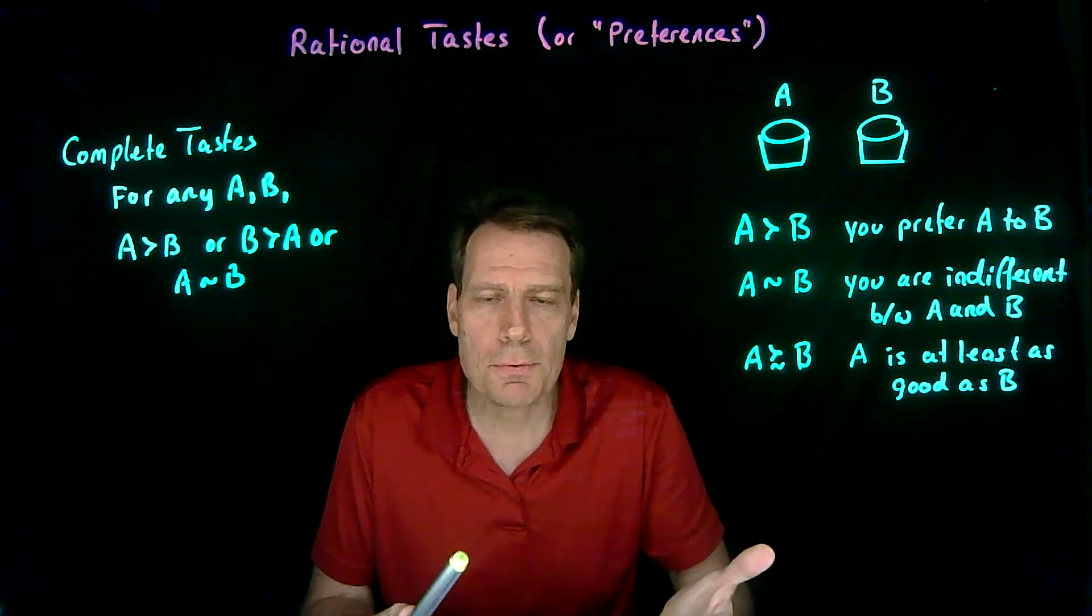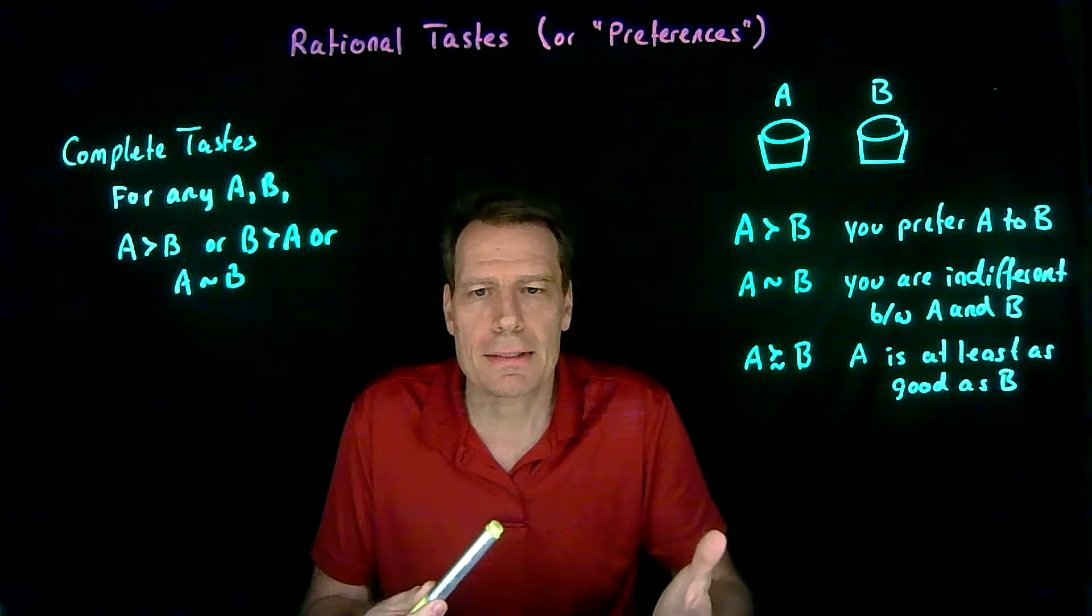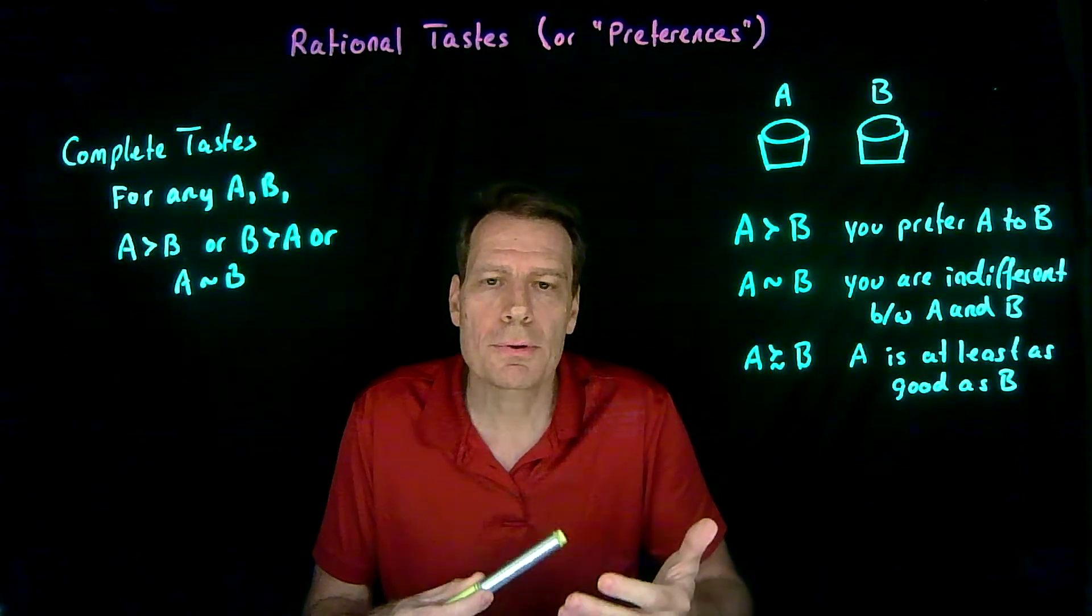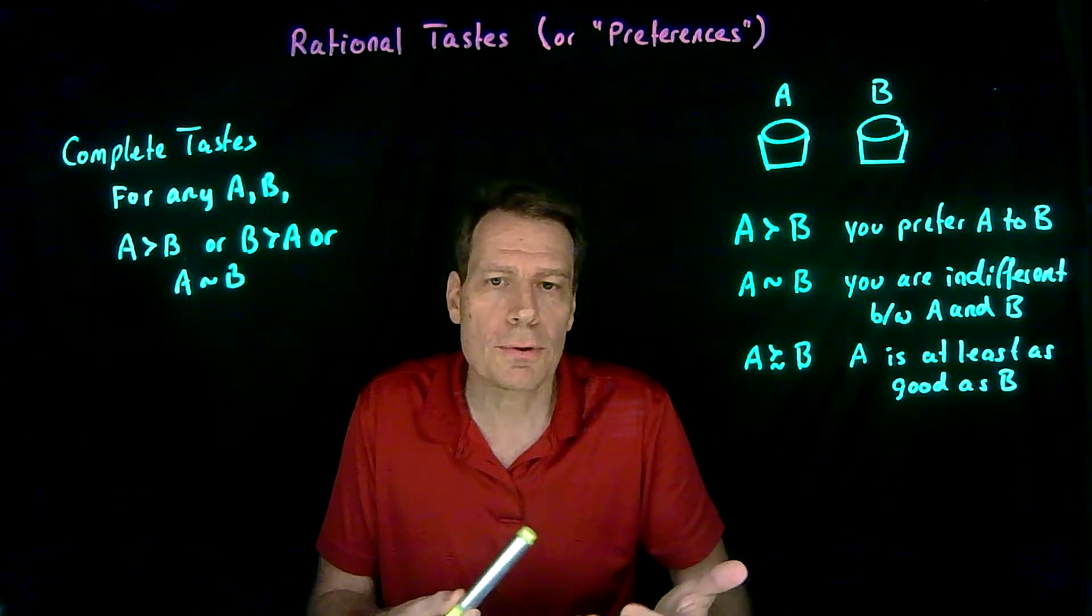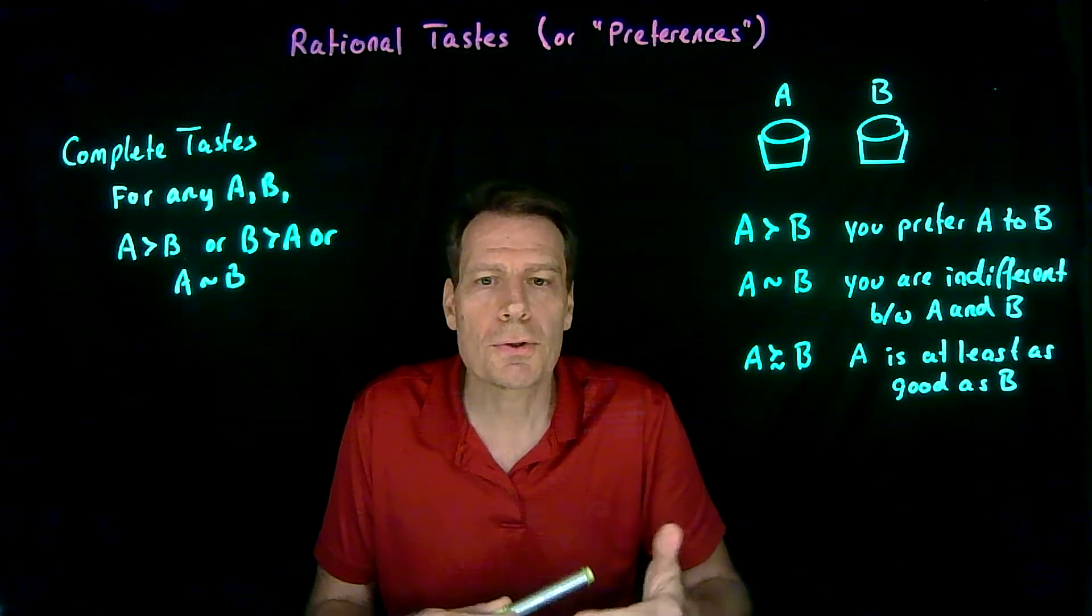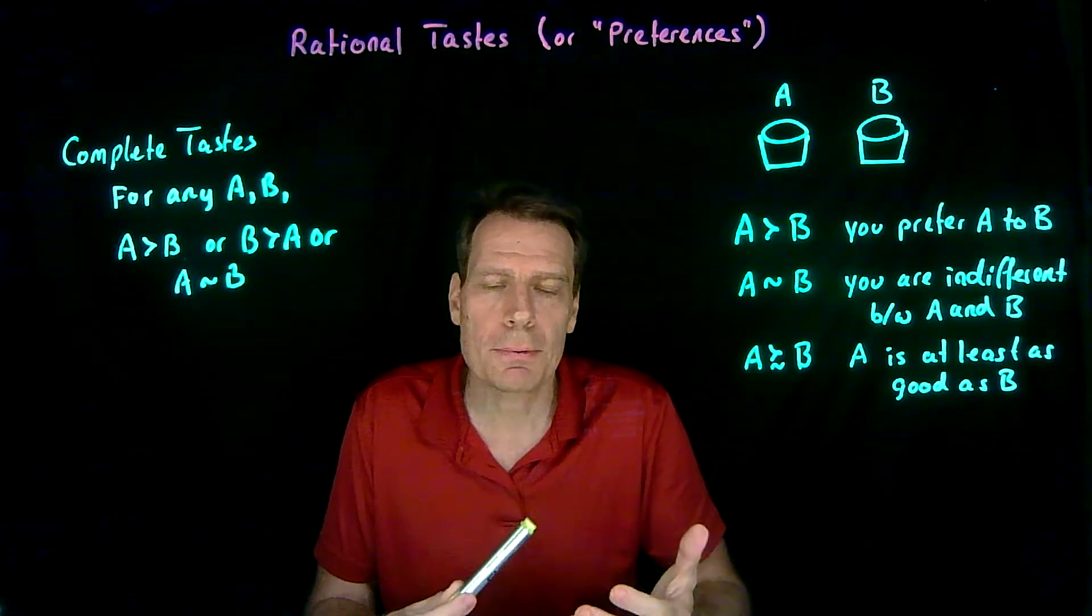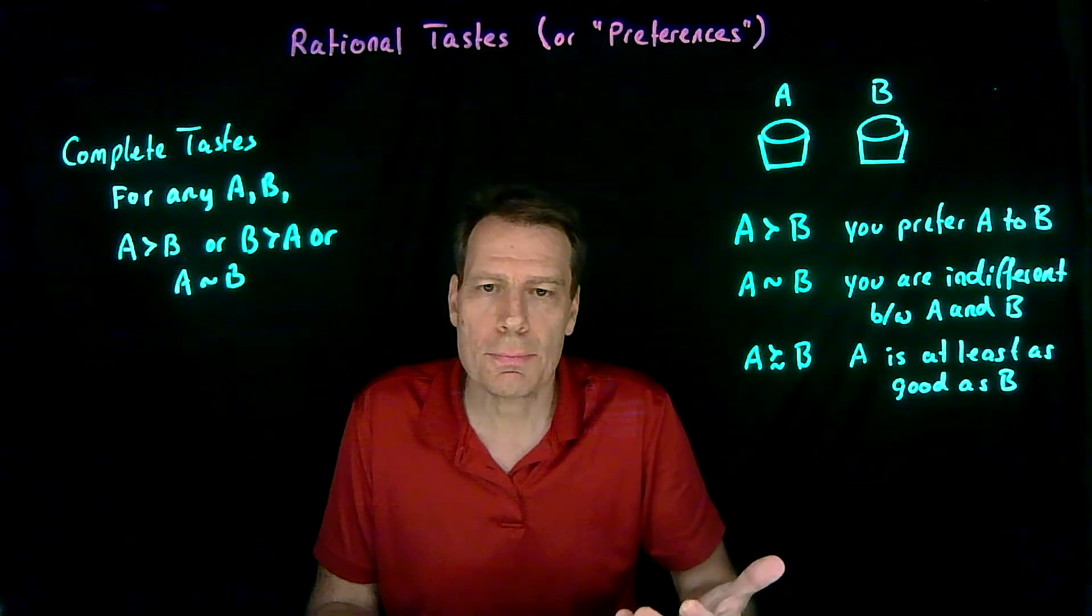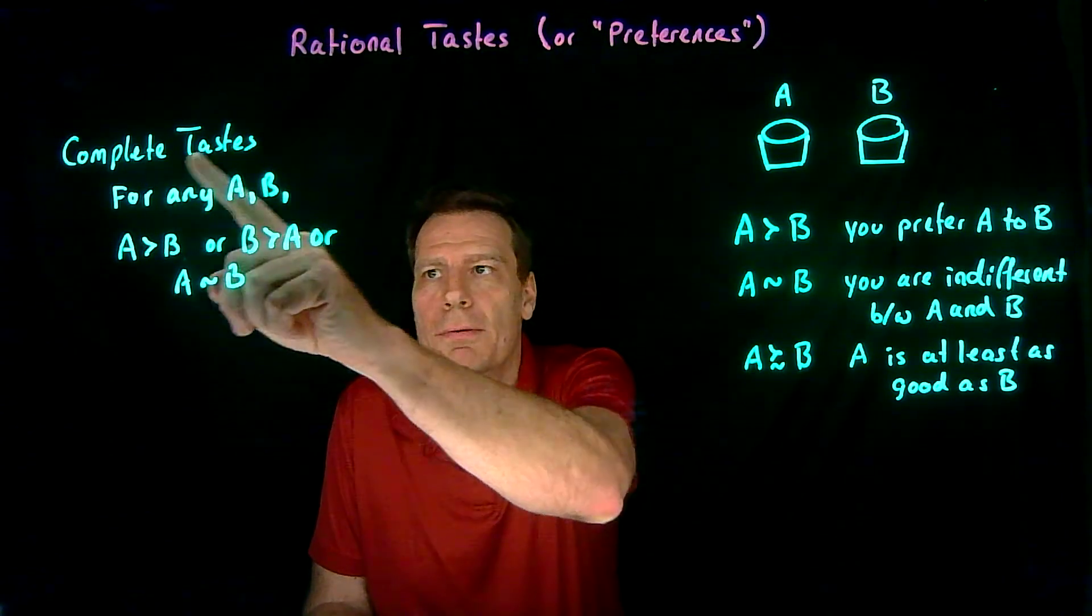So all we're saying is you're able to compare two different baskets. If I give you two baskets, you're not going to tell me these baskets are so different I can't choose between the two. You are able to make a choice or you're able to tell me that you're indifferent and you're happy with either one of them. In order for you to make a choice, you have to be able to compare baskets. And so when you can do that for any two baskets, we'll say that you have complete tastes.